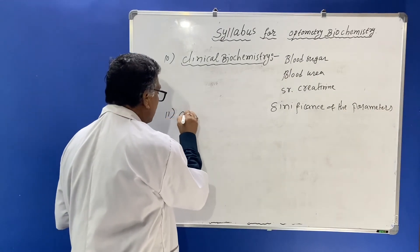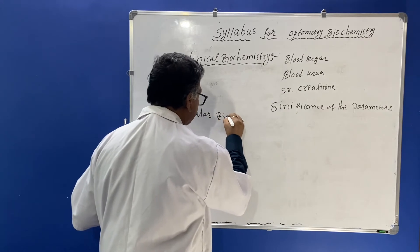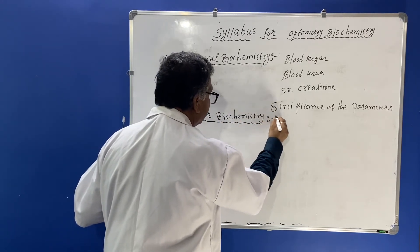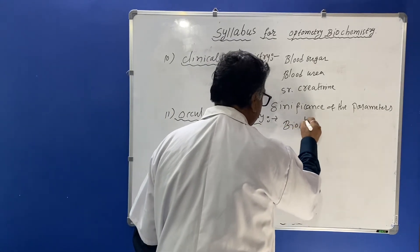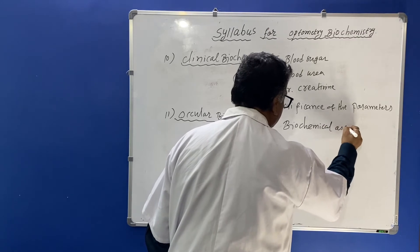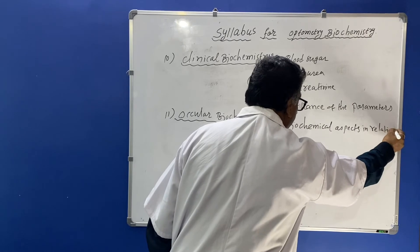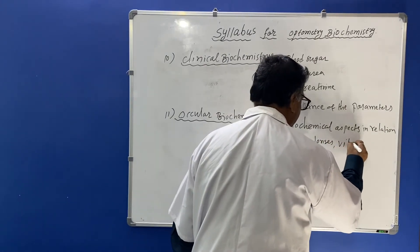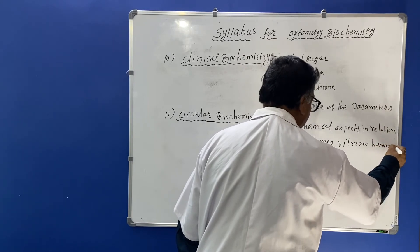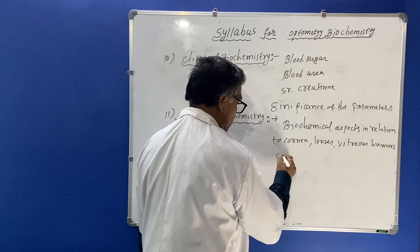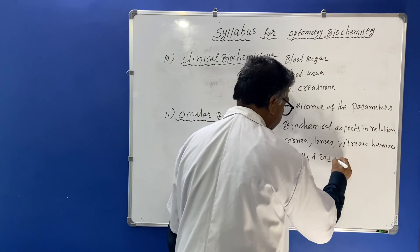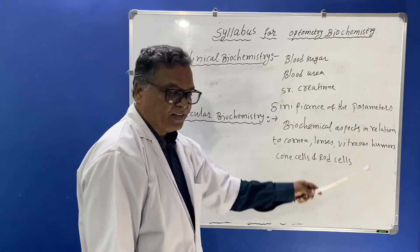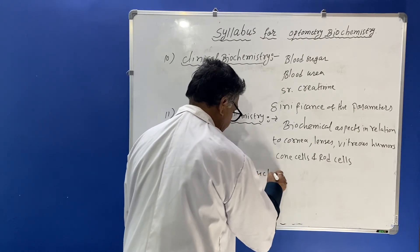The eleventh chapter is ocular biochemistry. Under this heading, you have to study the biochemical aspects in relation to cone cells and rod cells. You should know the biochemistry of cone cells and rod cells, as well as the structure and functions of the cornea, lens, and vitreous humor.